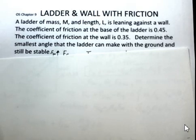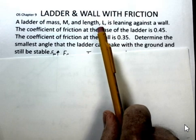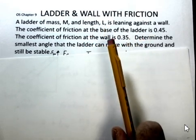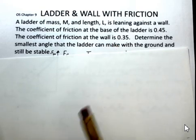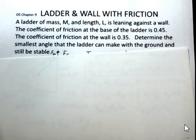In this video, we'll consider a ladder on the ground at the base, leaning against a vertical wall. The vertical wall has friction and the ground has friction. The ladder has a mass M and a length L. At the base, the coefficient of friction is 0.45; at the wall, the coefficient of friction is 0.35. We want to determine the minimum angle — the smallest angle the ladder makes with the ground.